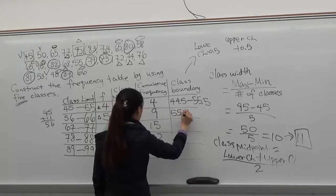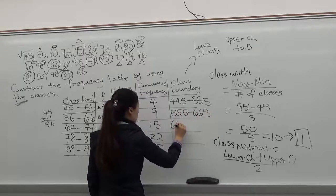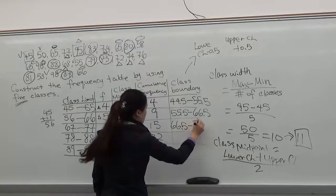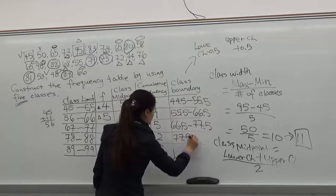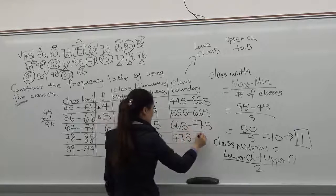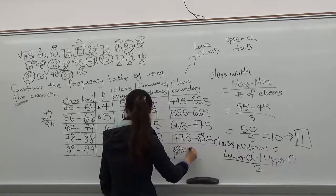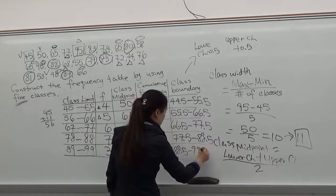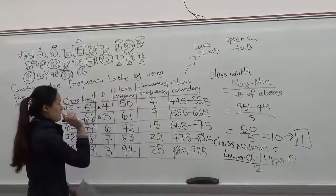55.5, 66.5, 66.5 to 77.5. 77.5 to 88.5. 88.5 to 99.5. Now we've finished with the frequency distribution table.